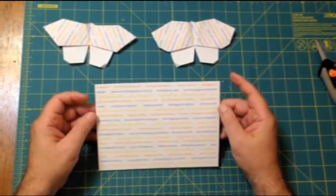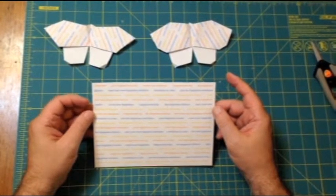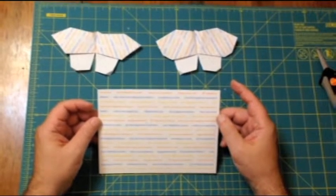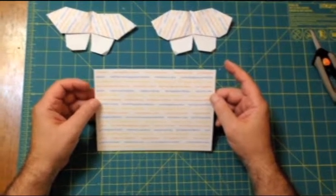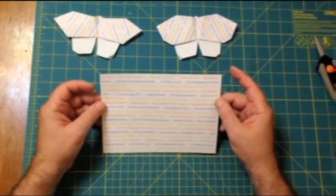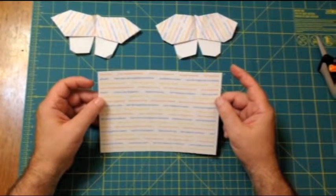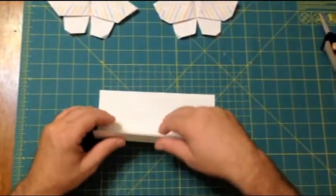So you start with a golden rectangle. This particular piece is 7 3 quarters by 5 and a half inches. If you need information on how to make this, there's another video here. So in any case, you start out folding this in half.